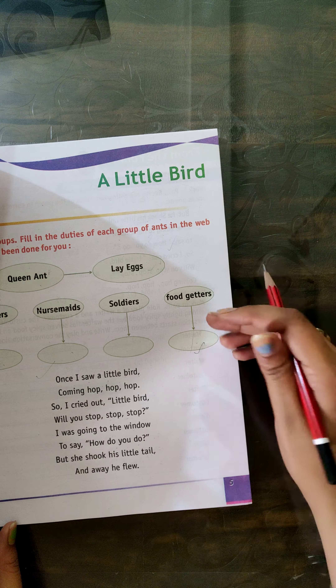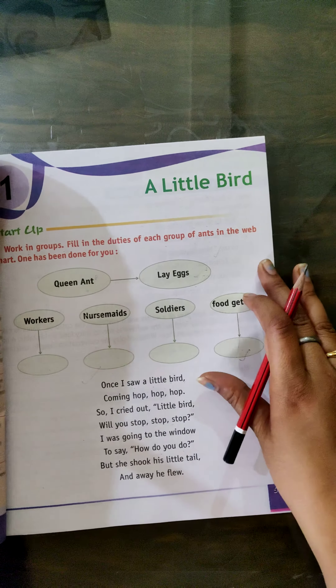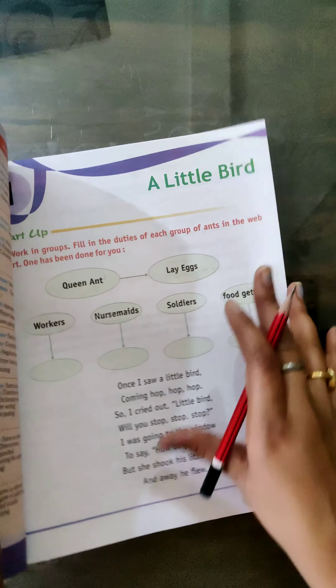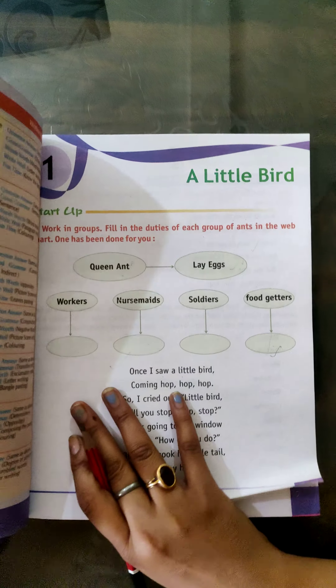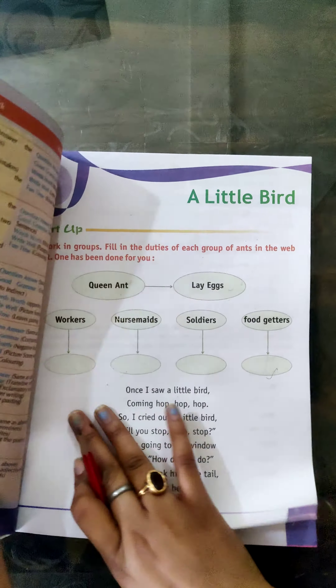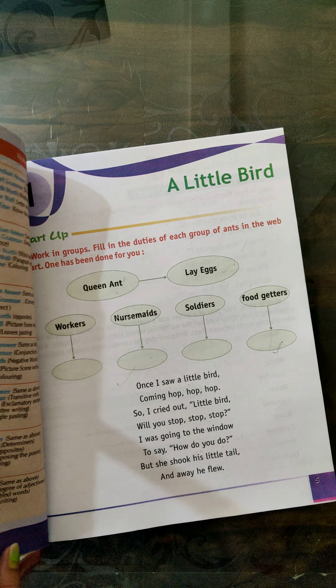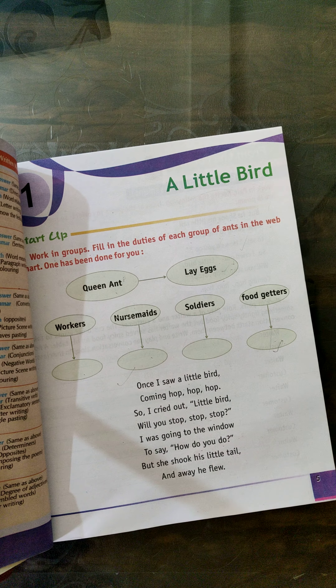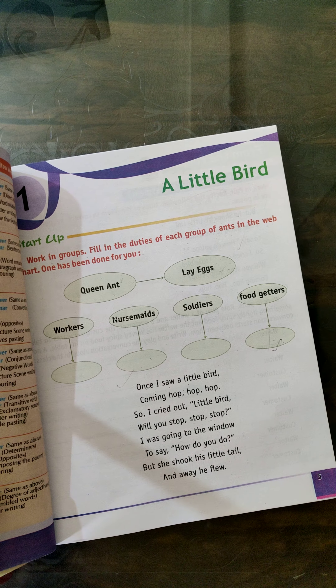If you already know, great. If not, use your internet — use your phone to look it up. If you can fill it in on your own, that's fine too. Now let's start with the poem — 'A Little Bird.'